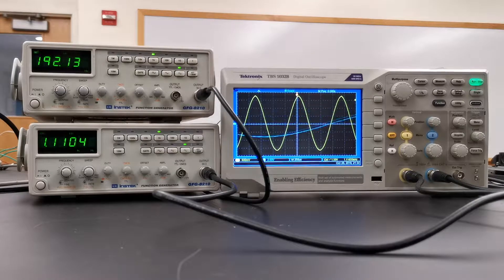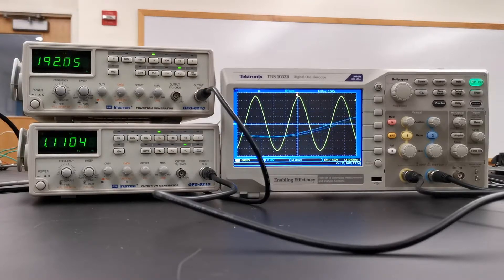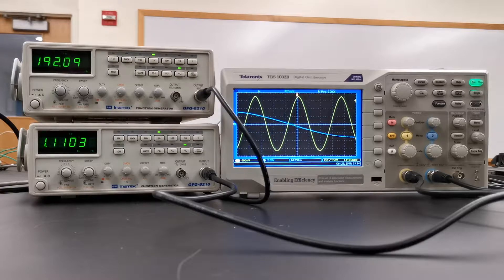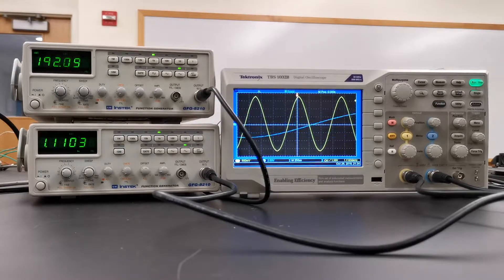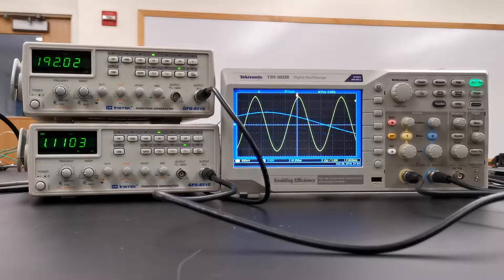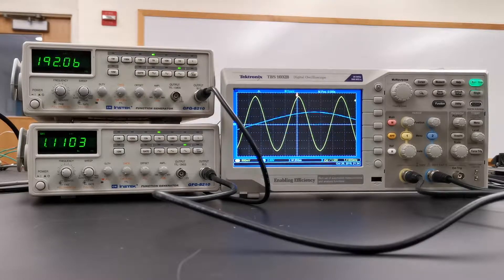Both of these generators right now are producing two different types of waves at different frequency. We will be using a sine wave to observe all results. Both of these waves are color-coded on the scope. Yellow is for channel one and blue is for channel two.